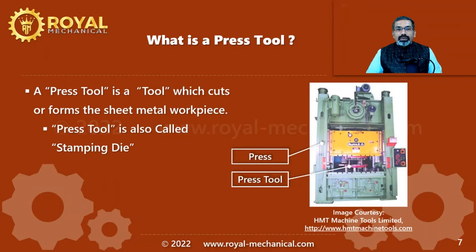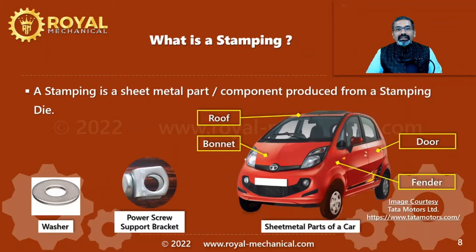A press tool is a tool used to cut or form the sheet metal workpiece. A press tool is also commonly referred to as a stamping die. Press tools are mounted on the press machine. Stamping is a part or component manufactured using a stamping die. Right from a simple washer to complicated body parts of a car — like the bonnet, the fender, the roof, the door — are manufactured using a stamping die.